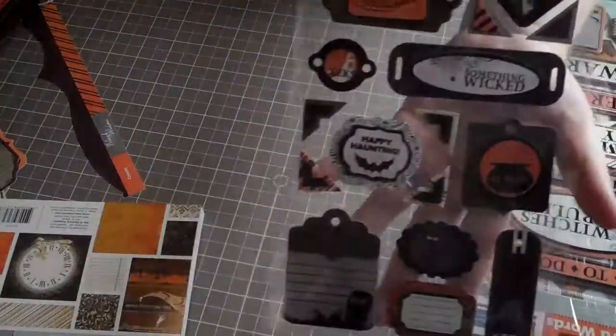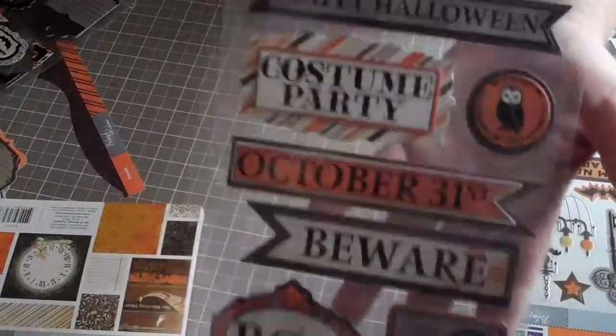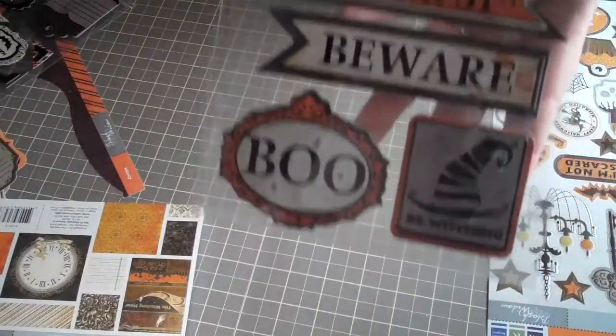And then next for embellishments we have some flower brads. These are really pretty. And our chipboard tags. Lots of good designs in there. The chipboard words. There you go. Those are really fun too. I'll give you some close ups of those.